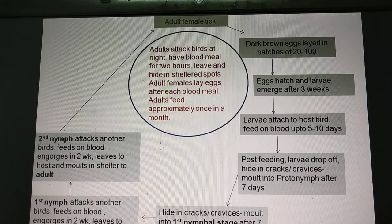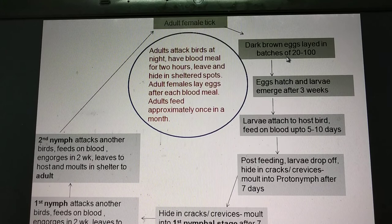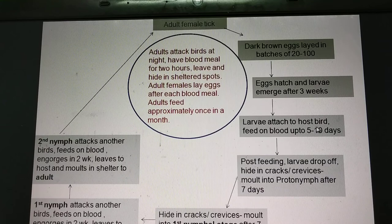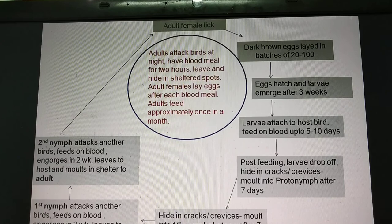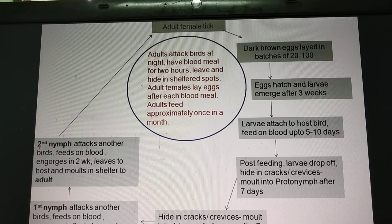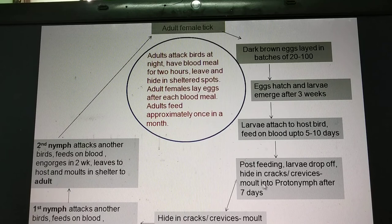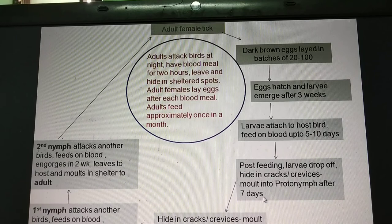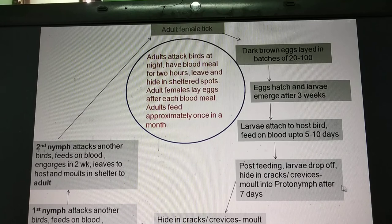After hatching, the larvae come out and attack the birds. The larvae are not intermittent feeders — they will attach to the bird and have their blood meal for five to ten days, then detach and drop off. They hide in the sheltered places — cracks and crevices — and molt within seven days, converting into the first nymphal stage called the protonymph.